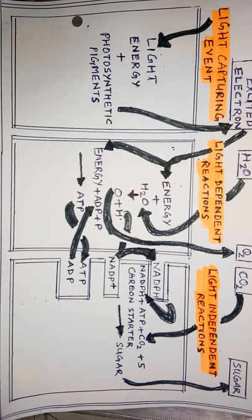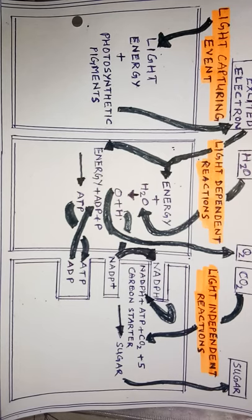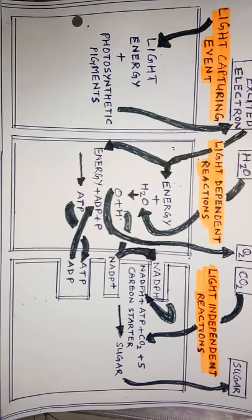In the next video, we shall switch over to the heterotrophic mode of nutrition. In this video, we covered the autotrophic mode of nutrition — how photosynthesis takes place in plants, the light dependent reactions, and the dark reactions for formation of glucose. Thank you, students.